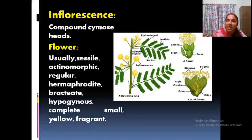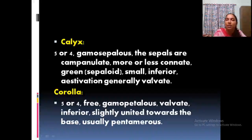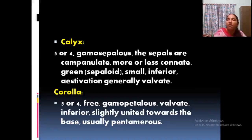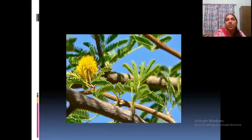Flowers are bisexual, bractate, and in hypogynous condition. Usually small, yellow-colored, and most are fragrant — highly perfumed. Calyx is usually five, sometimes four, gamosepalous (fused condition), and sepals are in valvate aestivation shape. Corolla is also usually five, free — polypetalous — but in some cases gamopetalous (fused) condition is also present. Usually pentamerous, five in condition.